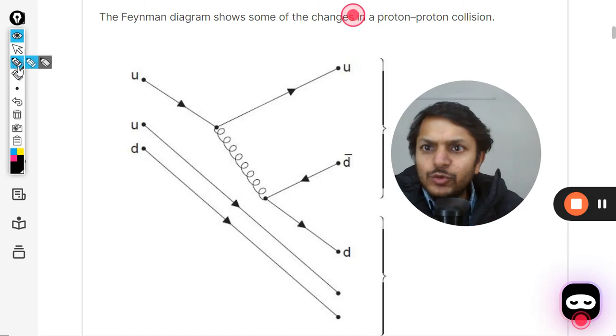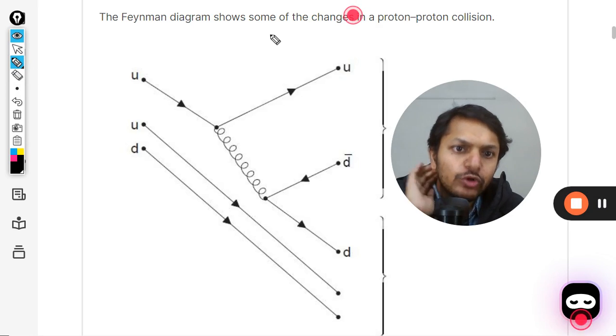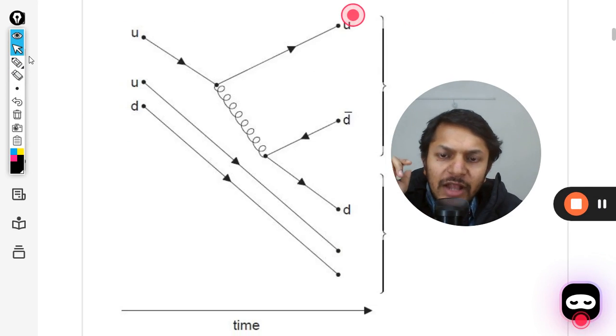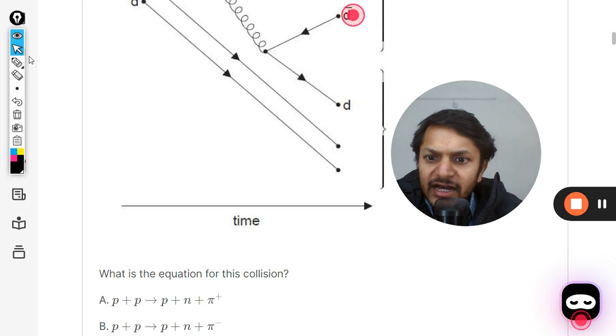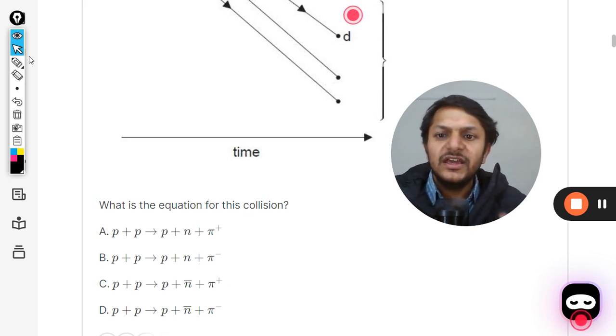Students, let us see what is there in this question. The Feynman diagram shows some of the changes in proton-proton collision. So proton and proton are colliding with each other and this is the Feynman diagram for that. These are the options A, B, C, D and we have to see which is the correct equation for the collision.